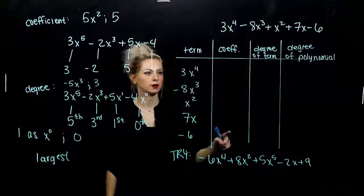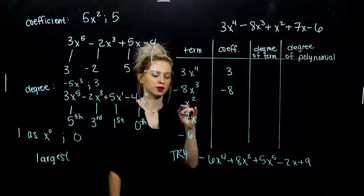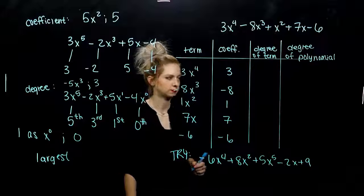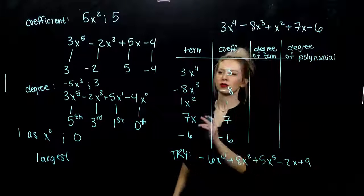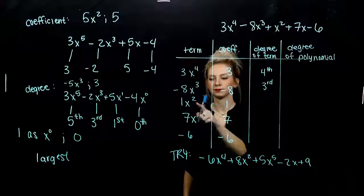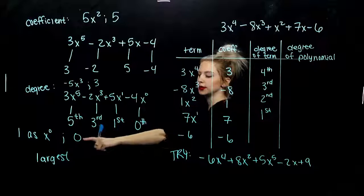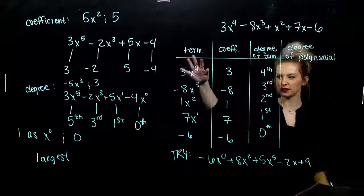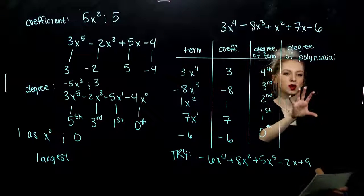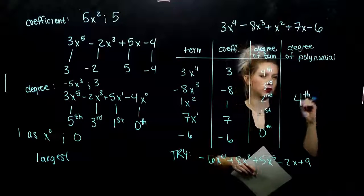Looking at the coefficients: three on the first, negative eight on the second, one on x squared — how many factors of x squared? One. Seven on 7x, and negative six. The degrees of each term: the first is to the fourth, second to the third, third is the second power, fourth is the first. Any constant is raised to the zeroth power. We generally see things in descending order with the highest power getting smaller. Our largest power was fourth, so overall this is a fourth degree polynomial.